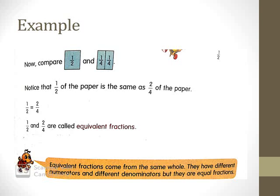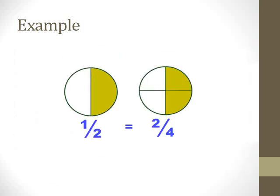So you can easily say one over two is equal to two over four. One over two and two over four are equivalent fractions. Equivalent fractions come from the same whole — they have different numerators and different denominators, but they are equal fractions. In the next example I'll tell you more.